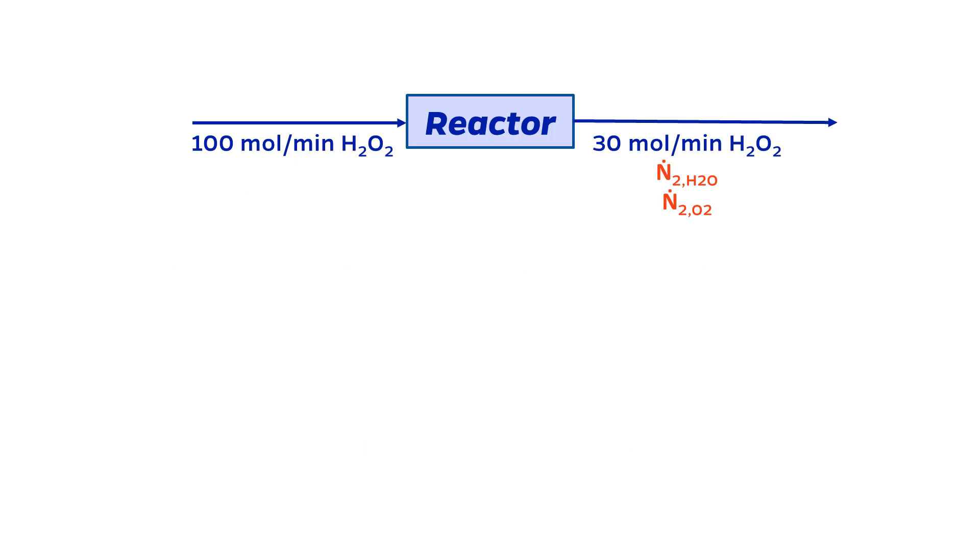Let's take the same example that we had last time, where 100 moles per minute of hydrogen peroxide comes into the reactor, with 30 moles per minute exiting the reactor, with requested molar flow rates of water and oxygen out of the reactor.